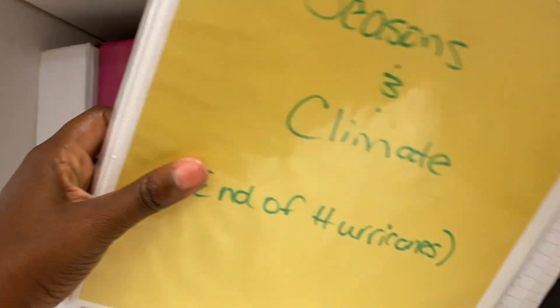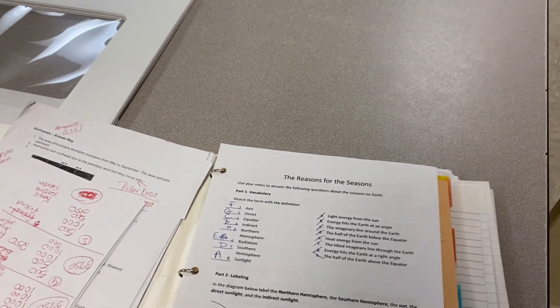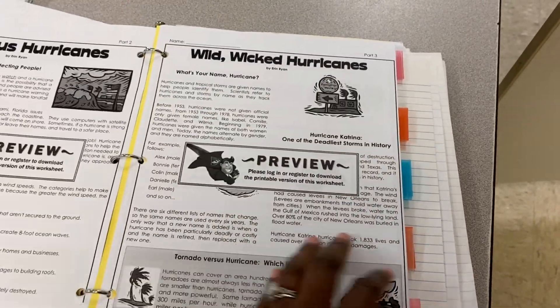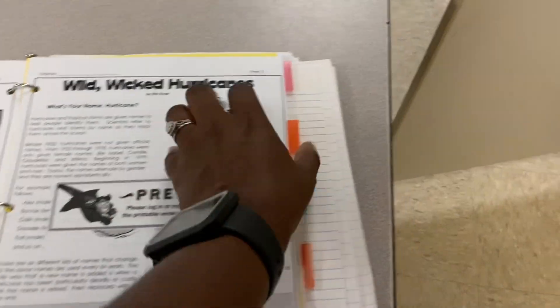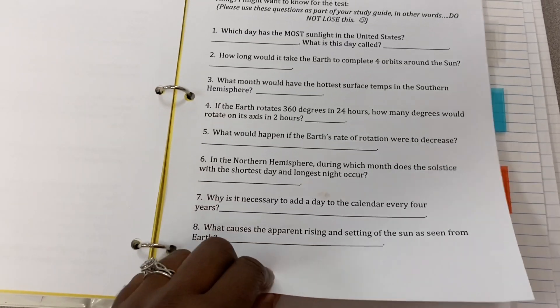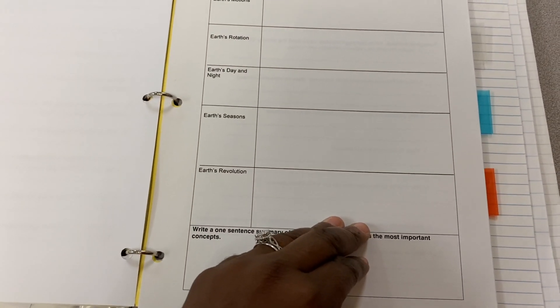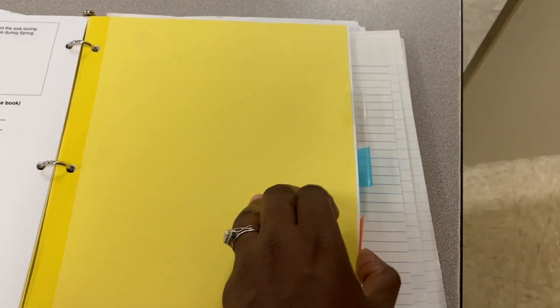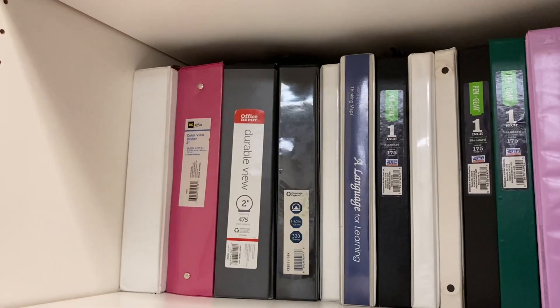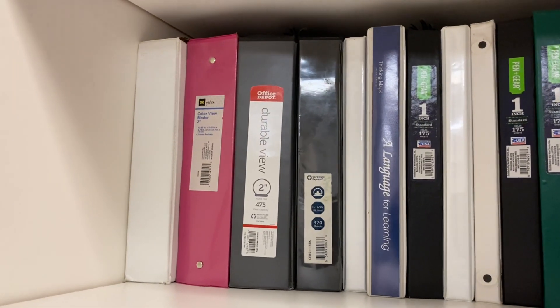For example, this one — Seasons and Climates. This would be like one of the first worksheets. Basically it's like the lesson plans for each unit followed by whatever worksheet is in there, then the next day, and so on. This one is Genetics and Genetic Engineering. Down here we have Newton's Laws and Plate Tectonics.